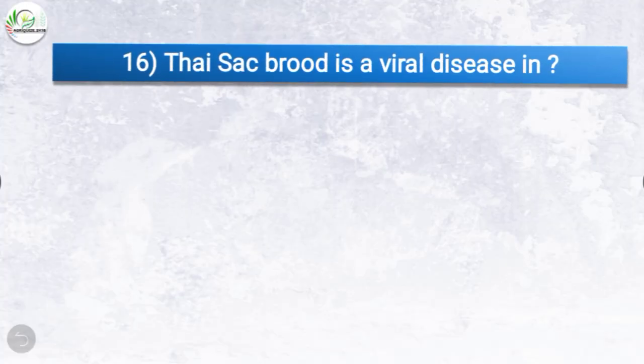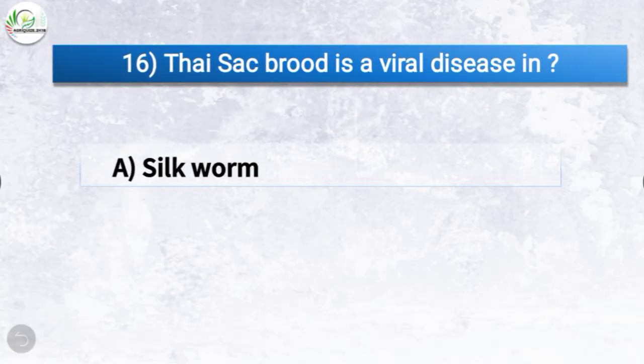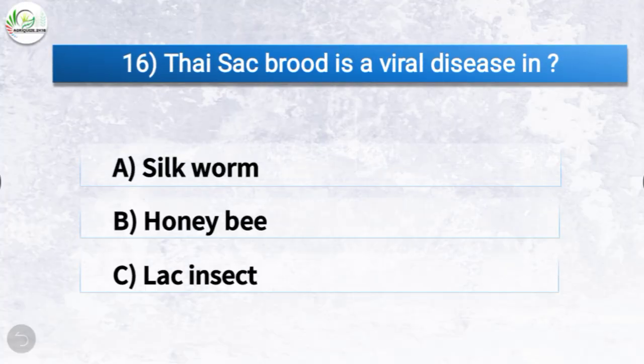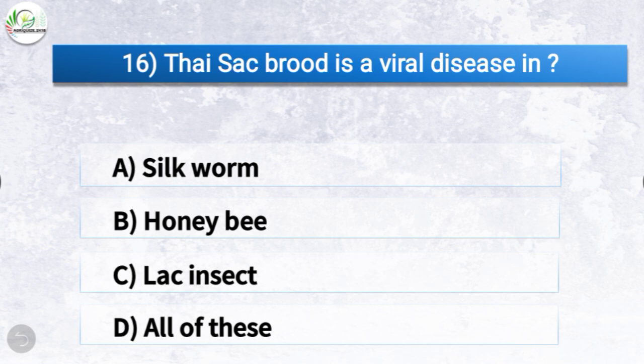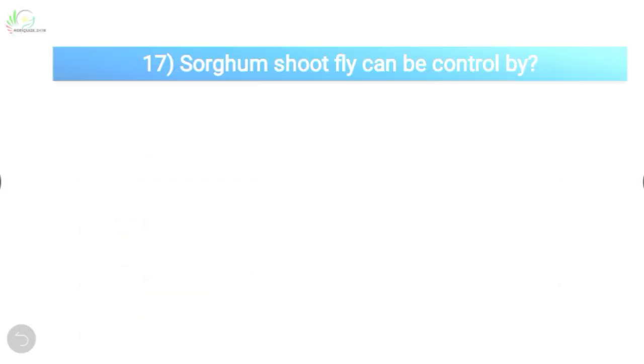Question number sixteen: Thai sac brood is a viral disease in which organism? The options are silkworm, honeybee, black insect, or all of these. The correct answer is option B, honeybee. So Thai sac brood is a viral disease in honeybee.